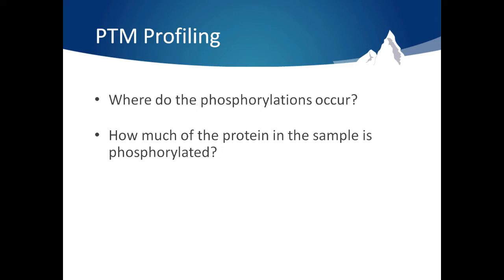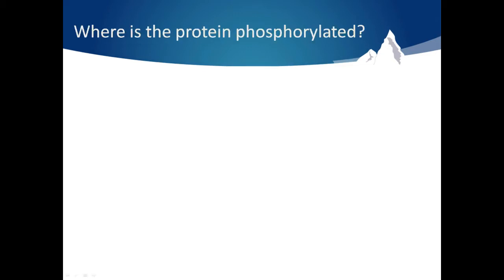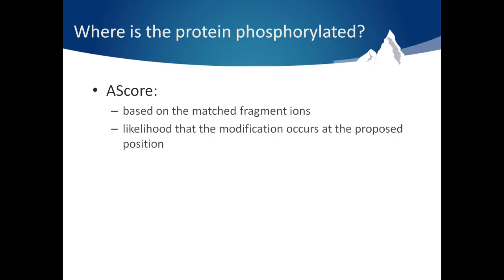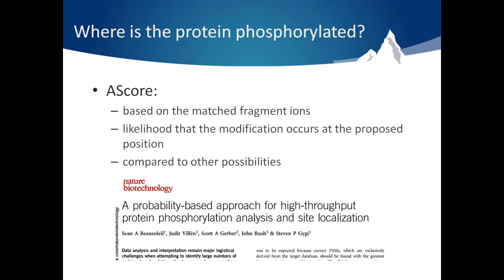To answer the question of where the PTM occurs, PEAKS provides an A-score for each proposed PTM. The A-score is based on the evidence from the fragment ions and is the probability that the modification is present at that position compared to other possibilities. Our A-score follows the guidelines outlined in the paper shown here.